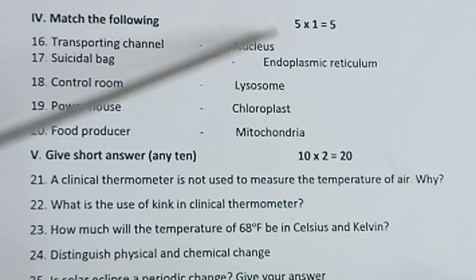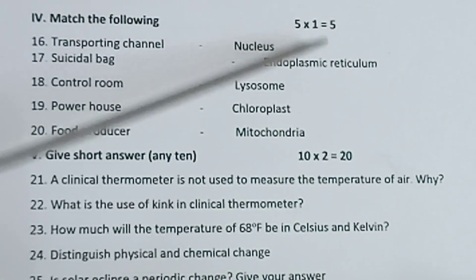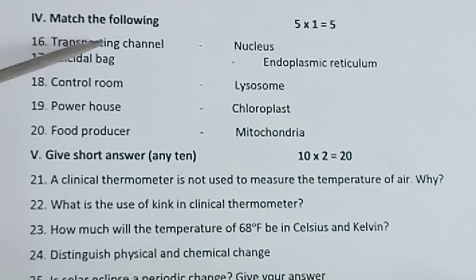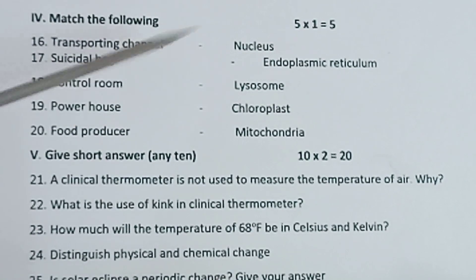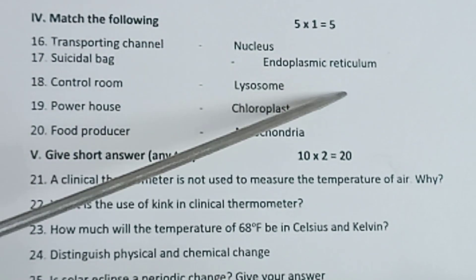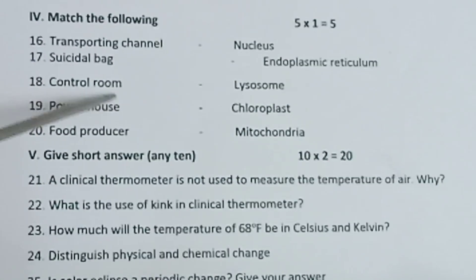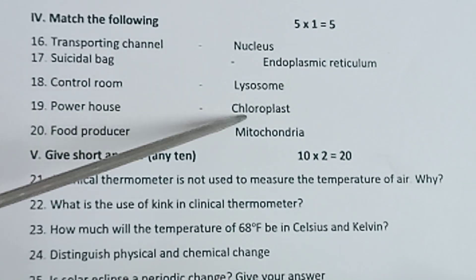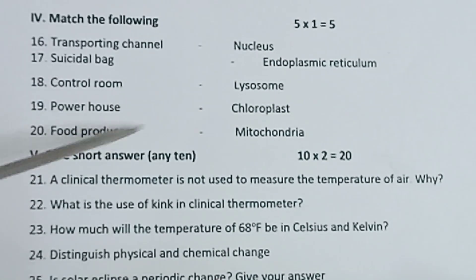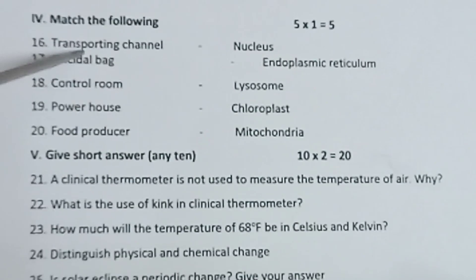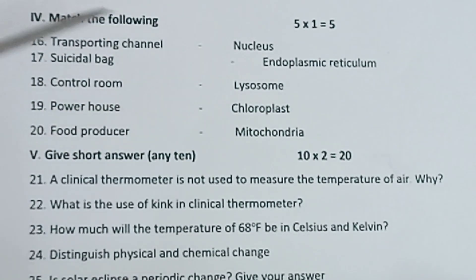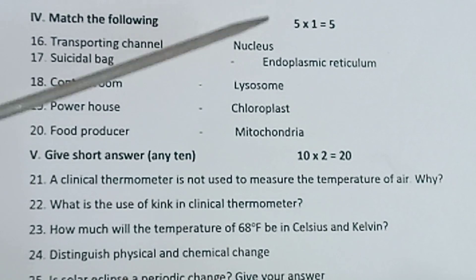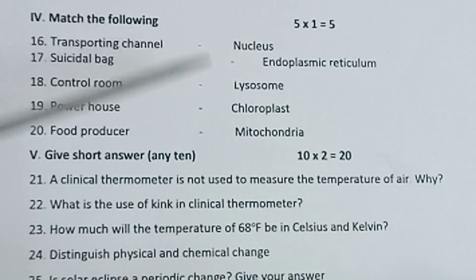Section IV — match the following. 5 into 1 is equal to 5. Transporting channel — endoplasmic reticulum; suicidal bag — lysosome; control room — nucleus; powerhouse — mitochondria; food producer — chloroplast. Match the left-hand side questions with the right-hand side answers in correct order.